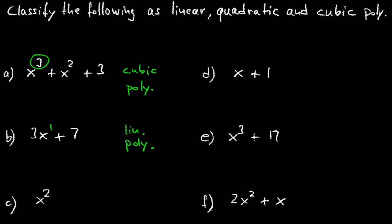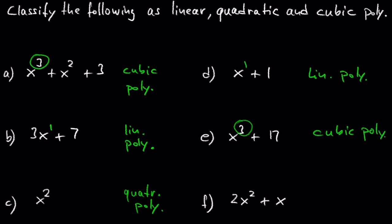In C we have x squared, which is a quadratic polynomial. In D we have x plus 1; the exponent of x is 1, so this is a linear polynomial. In E we have x cubed plus 17; the exponent 3 tells us this is a cubic polynomial. In F we have 2x squared plus x; the leading term 2x squared has exponent 2, so this is a quadratic polynomial.